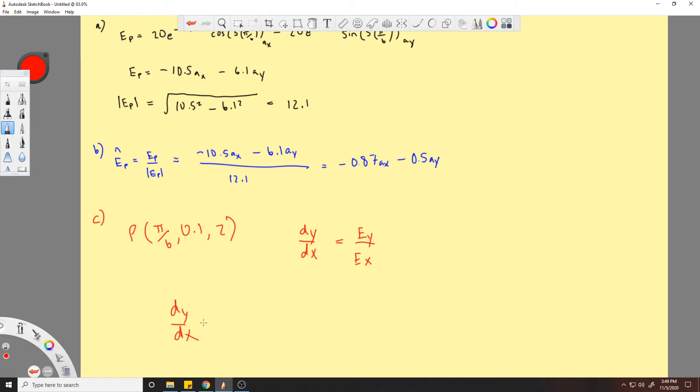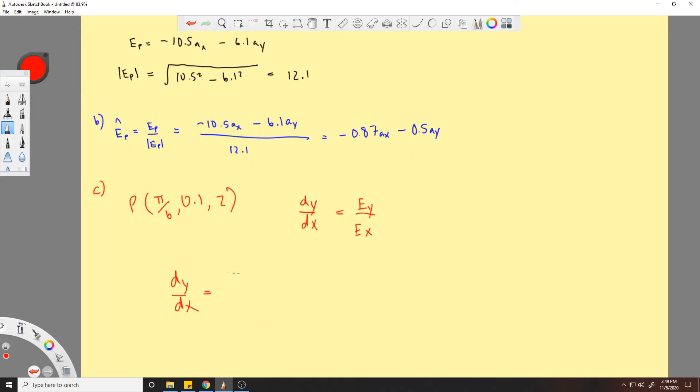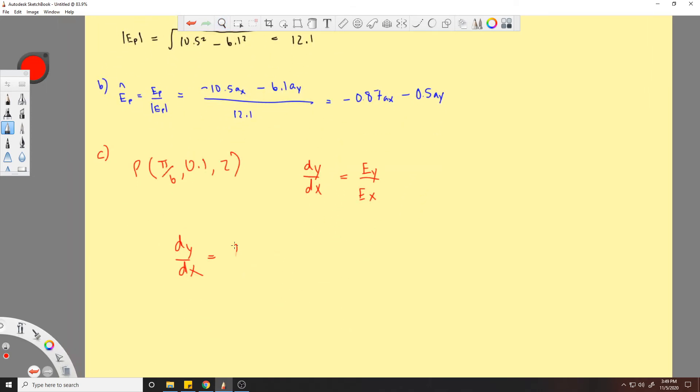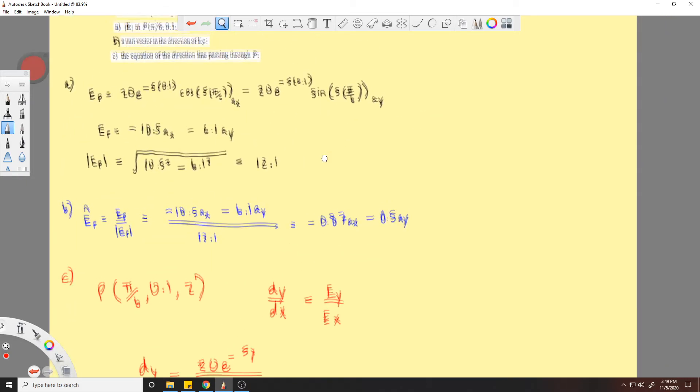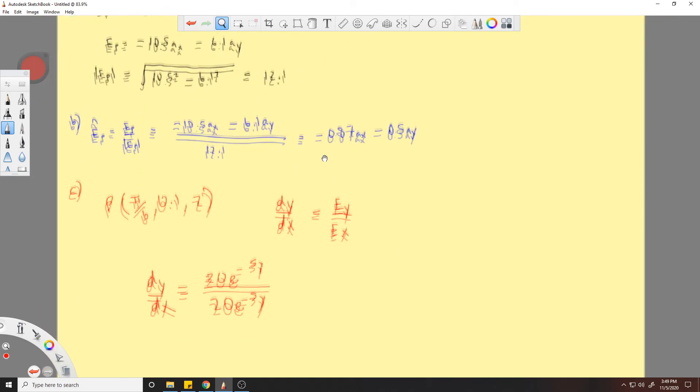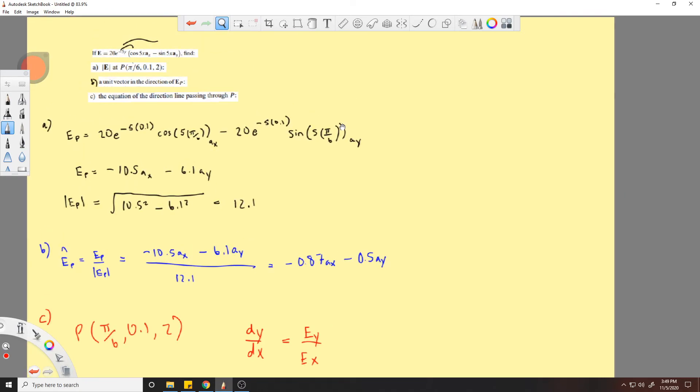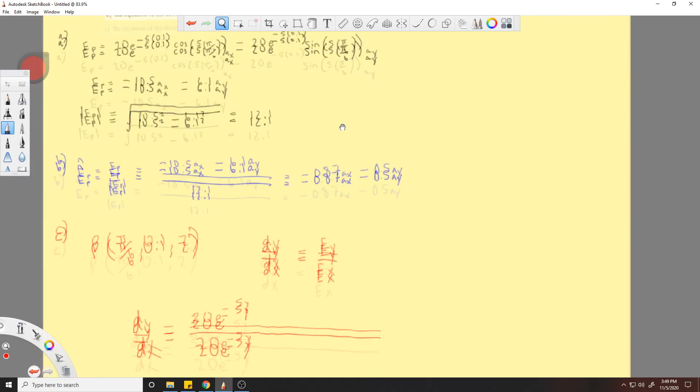You'll get dy/dx equals 20 e^(-5y) over 20 e^(-5y). You see how these cancel? They're going to cancel, and then you have the other parts of the components because this term is part of the E_y component and the E_x component. So it's really the other two that matter. So it's the negative sine 5x.